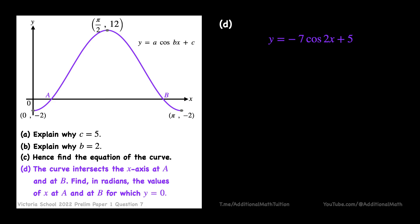In part d, we use this equation and set y to be 0. After getting cos(2x) to be equal to 5/7, basic angle α = cos⁻¹(5/7).